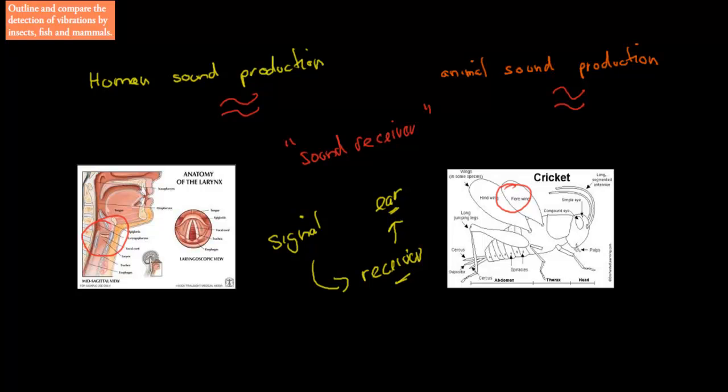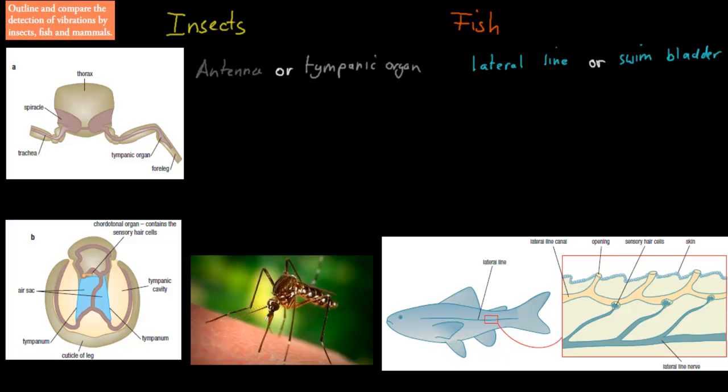So in this video, we're going to compare detection of vibrations by insects, fish, and mammals. Basically, we're going to talk about the receivers—how insects, fish, and mammals receive sound, as opposed to produce sound, which we talked about in the last chapter.